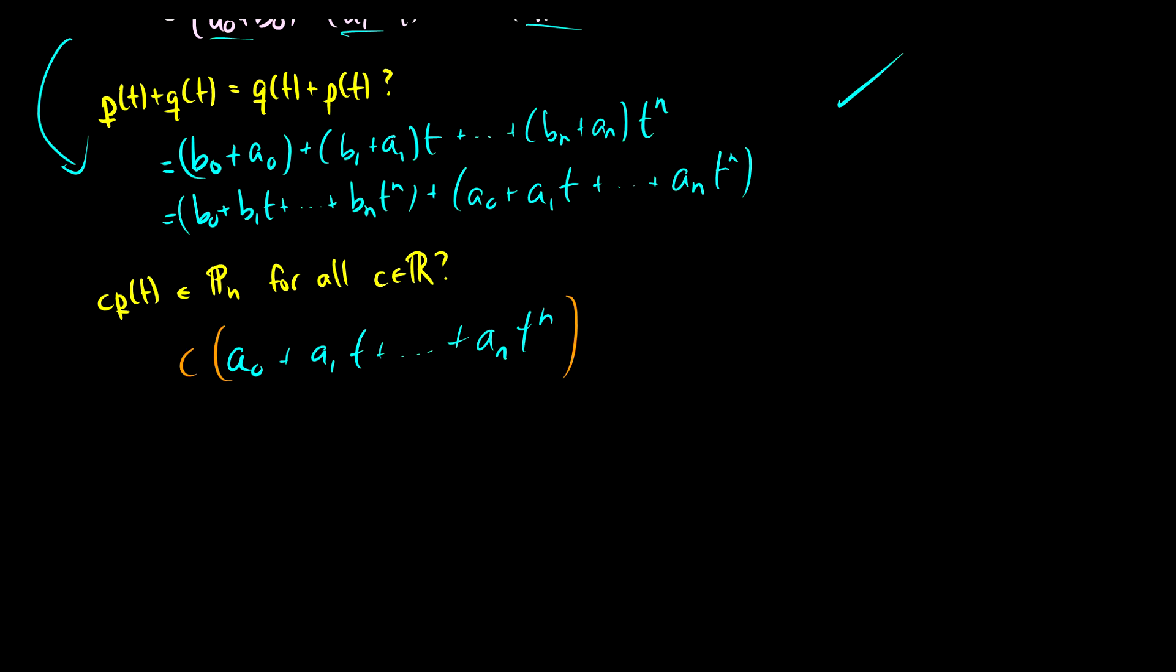then we just end up with c times a_0 plus c times a_1 times t, all the way up to c a_n times t to the power of n, and we're good. So these were three of the axioms. With these three axioms, you can prove everything else pretty straightforwardly.